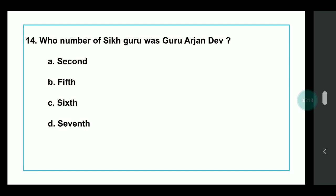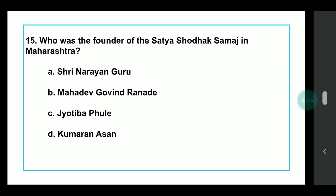Q14: Which number Sikh Guru was Guru Arjan Dev? Answer: Guru Arjan Dev was the 5th Sikh Guru, and he was sentenced to death by hanging by Jahangir. Q15: Who was the founder of the Satya Shodhak Samaj in Maharashtra? Answer: It was founded by Jyotiba Phule.